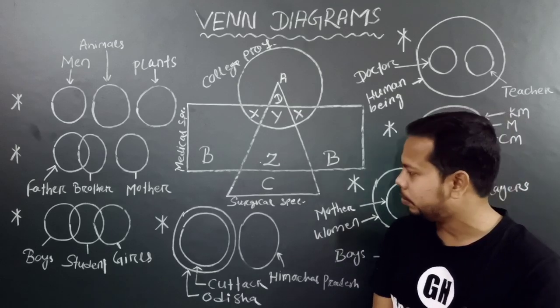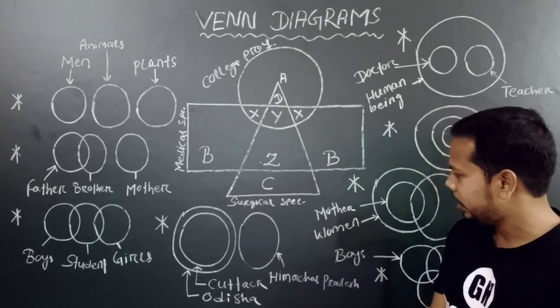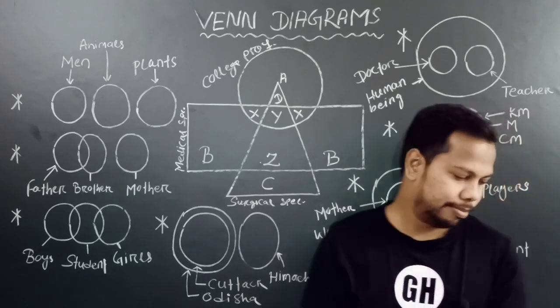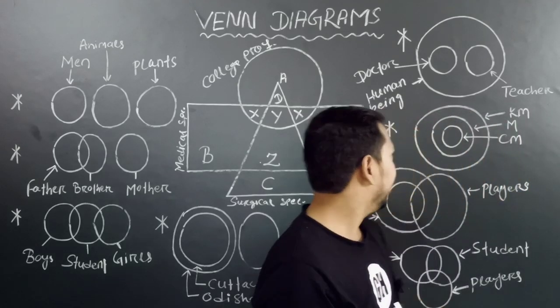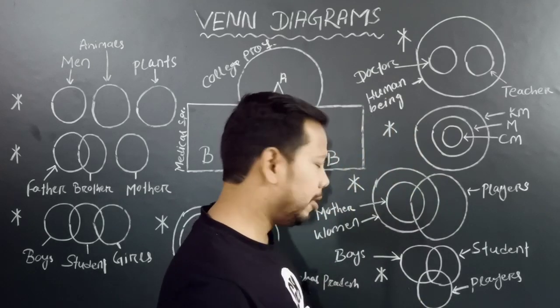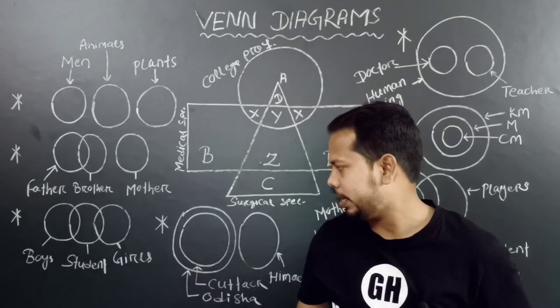Venn diagram is a very good way to see it. If you look at Venn diagram, it is a very good way to understand the relationships between categories.